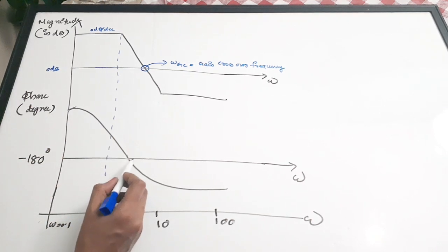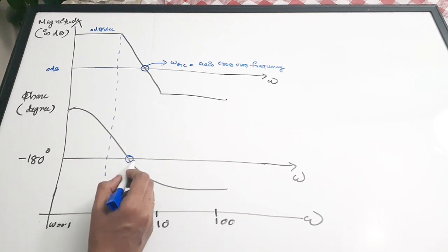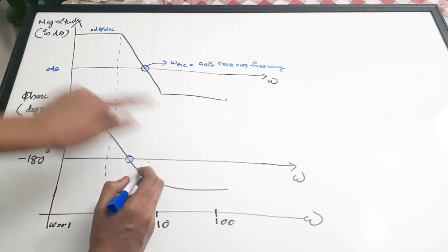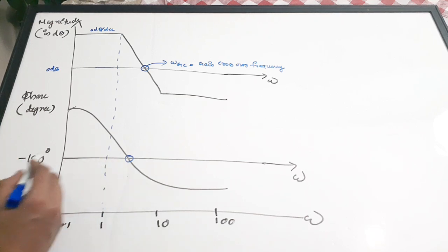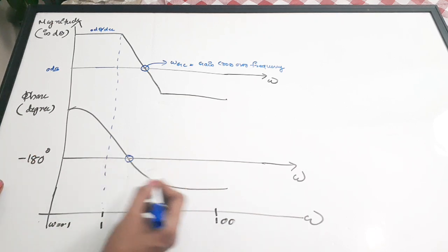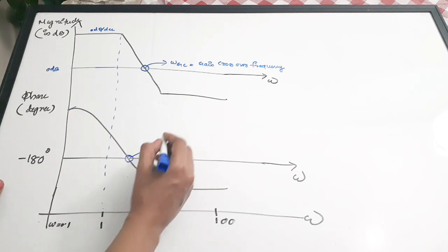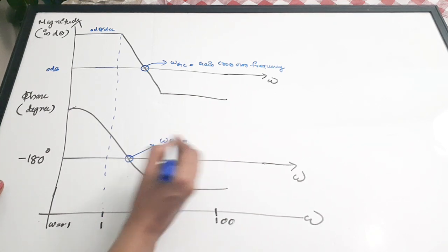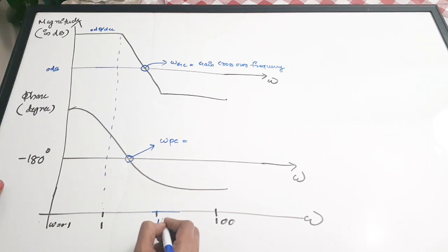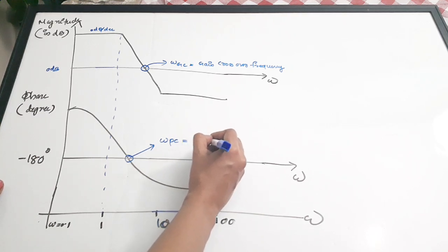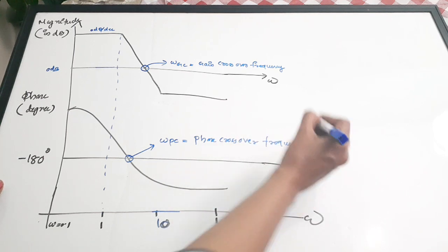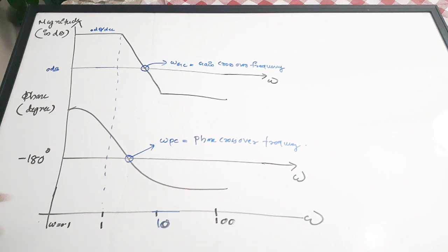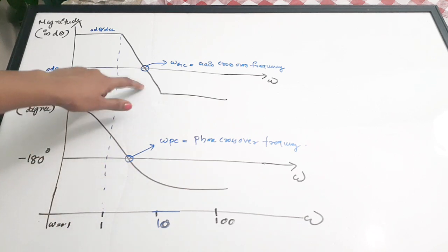Similarly, in the phase plot, you observe the phase plot crossing the minus 180 degree reference line. The phase is measured in degrees, and the frequency at which it crosses that minus 180 degree line is called the phase crossover frequency, WPC.